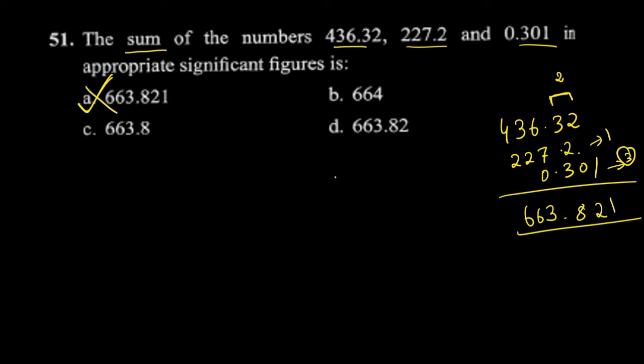The answer should have one decimal place, which is the minimum. This is the correct approach. We need to round off the result. If you look at the answer, you get 663.8.